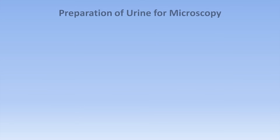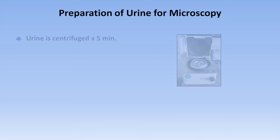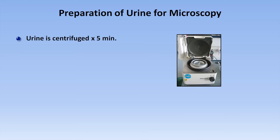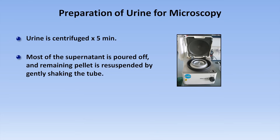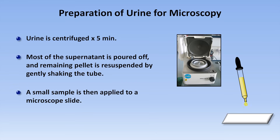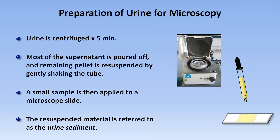I'll start off similarly to the last video by talking about how to prepare the urine for microscopy. At least 10 milliliters is centrifuged for five minutes at a speed which varies depending upon the characteristics of the centrifuge. Most of the supernatant — the liquid layer that settles on top — is poured off, and the remaining pellet, the solid substance at the bottom, is resuspended by gently shaking the tube. A small sample is then applied to a microscope slide with a cover slip. The resuspended material is referred to as the urine sediment, which is then looked at under a microscope.